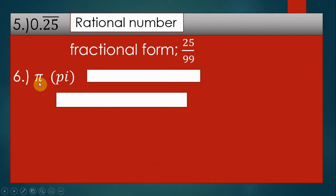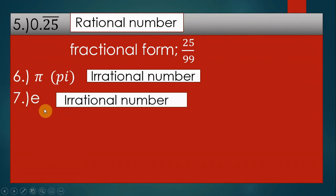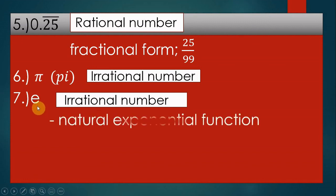Now, pi. Is pi a rational number or irrational number? Pi is used when computing the area of a circle. Pi is irrational because there is no exact value for pi. How about E, the natural exponential? E is also irrational — it doesn't have an exact value, so therefore E is an irrational number.